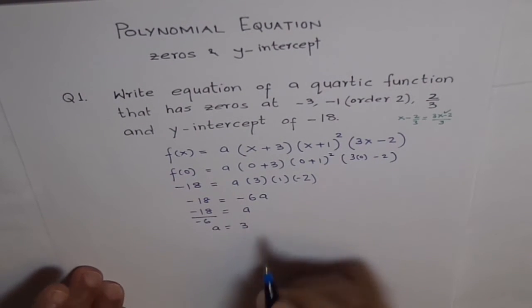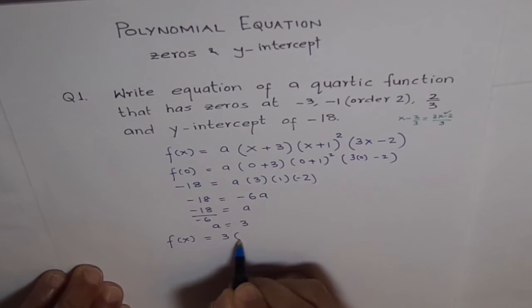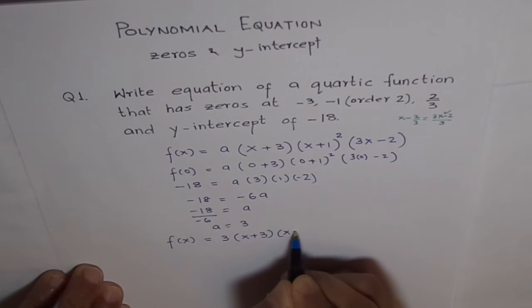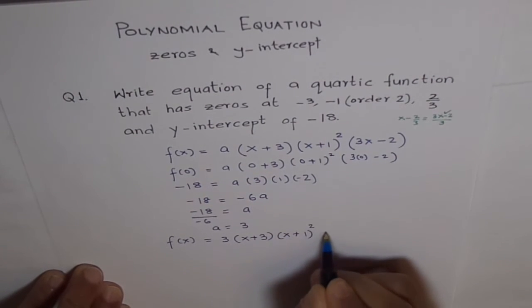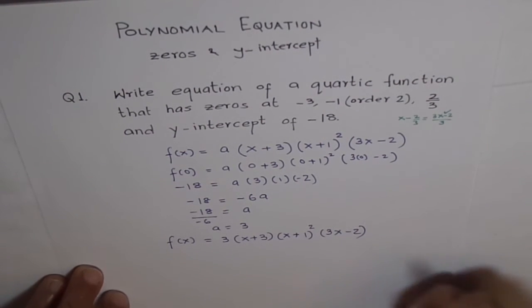Therefore, our function is f(x) equals 3 times x plus 3, x plus 1 whole square, 3x minus 2. Correct?